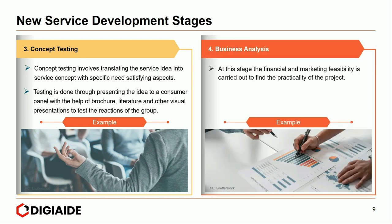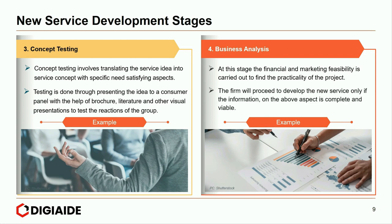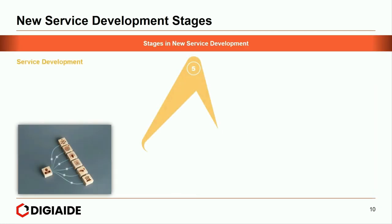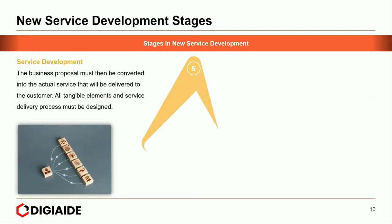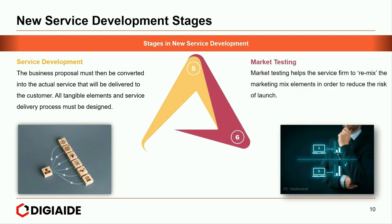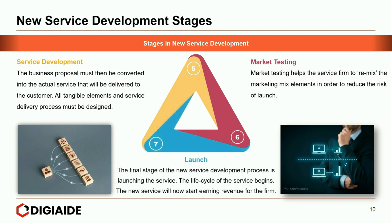Fourth is business analysis. At this stage, financial and marketing feasibility is carried out to find the practicality of the project. The firm will proceed to develop the new service only if the information is complete and viable. Number five, service development — the business proposal must be converted into the actual service delivered to the customer, with all tangible elements and service delivery process designed. Number six, market testing — this helps the service firm to remix the marketing mix elements to reduce the risk of launch. And finally, the stage of launch — the life cycle of the service begins and the new service starts earning revenue for the firm.